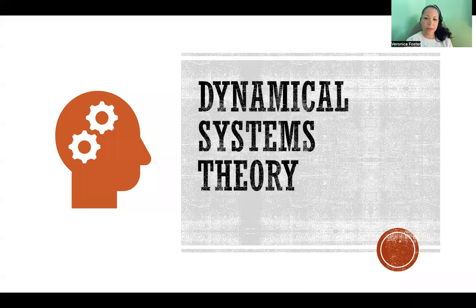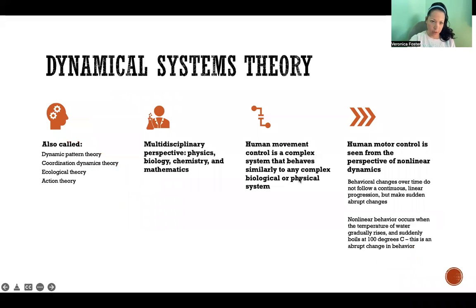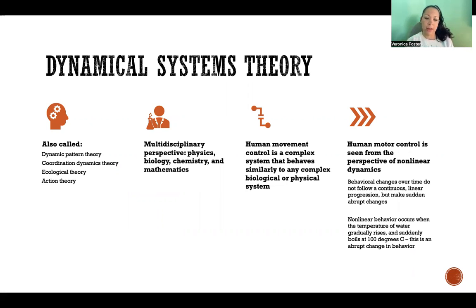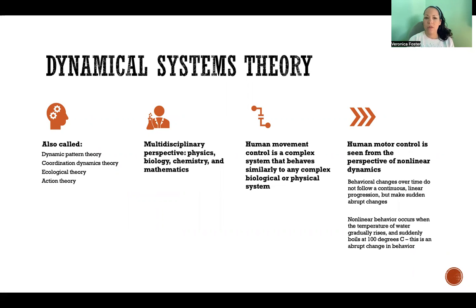Hello. In this video, I'm going to talk about dynamical systems theory. Dynamical systems theory has a lot of other names — it's also called dynamic pattern theory, coordination dynamics theory, ecological theory, and action theory. It is a multidisciplinary perspective that is based on physics, biology, chemistry, and mathematics, and this type of theory is applied in lots of different areas of science, not only in motor control.